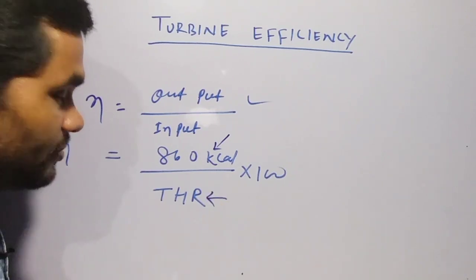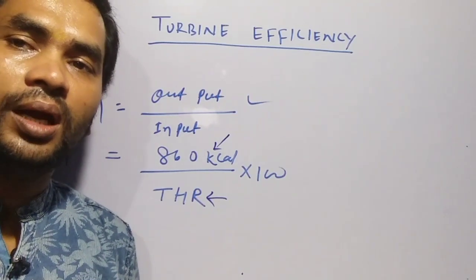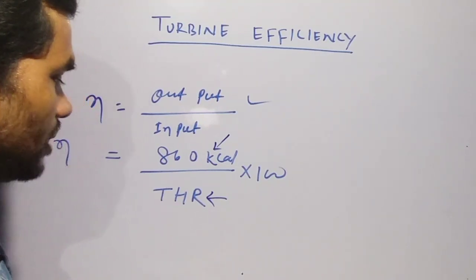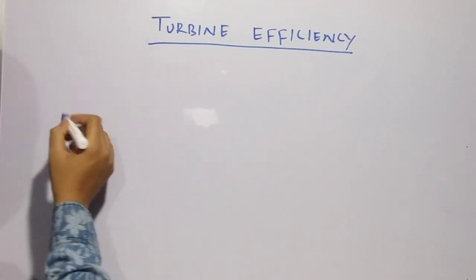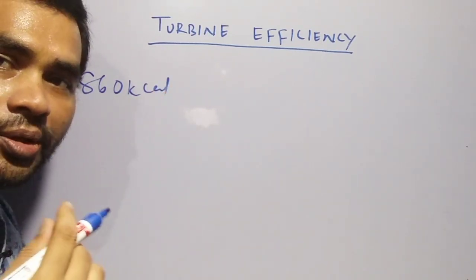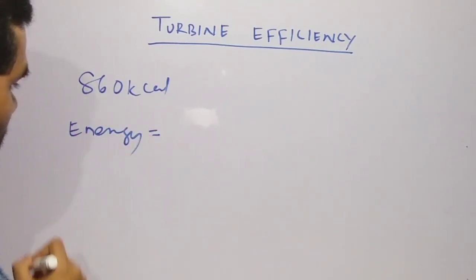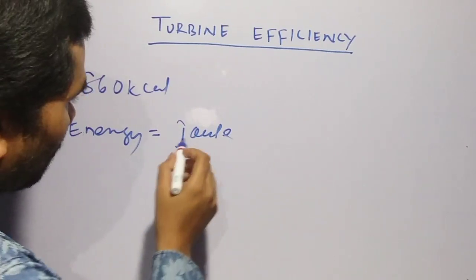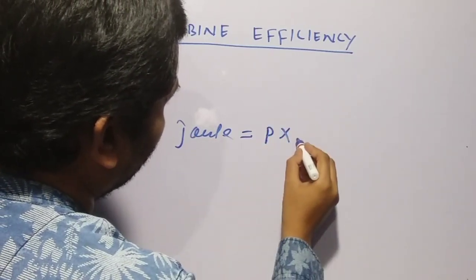THR means turbine heat rate, which means the amount of heat required at the turbine inlet to generate 1 kilowatt-hour of power. Now I will tell you what is 860 kilocalorie. All we know the energy unit is Joule.